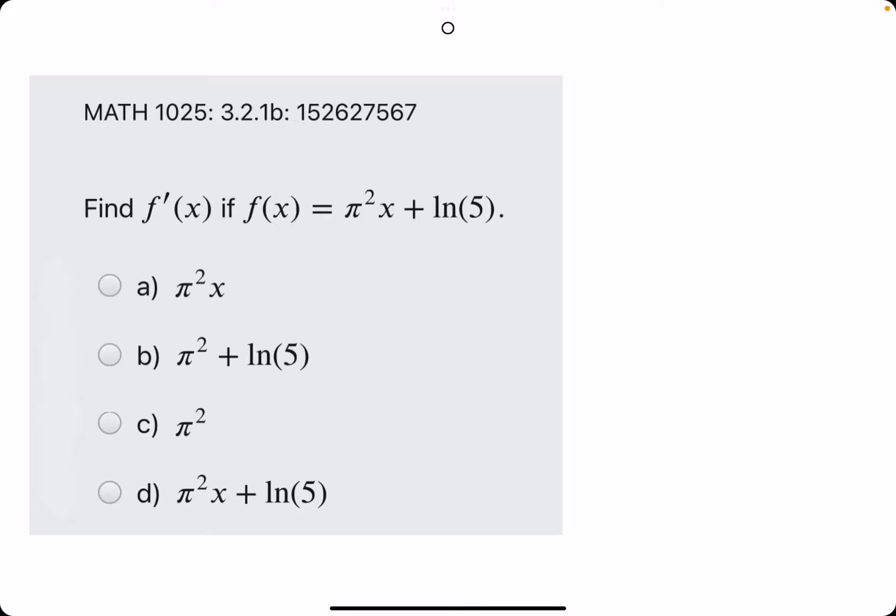Okie dokie, in this problem they ask for f prime of x, the derivative of this function f of x equals π² times x plus ln, or the natural log of 5. So where do we start?